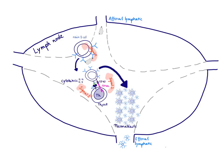Once the B-cell has received these three signals, it's going to differentiate and proliferate into so-called plasma blasts. These are the B-cells that have IgM on their surface and are already going to start secreting antibodies — that's a major job of B-cells. Plasma blasts only make IgM antibodies, which are pentamers. Once they are produced, they can leave via the efferent lymphatic, go via the thoracic duct into the blood, and help clear the infection.